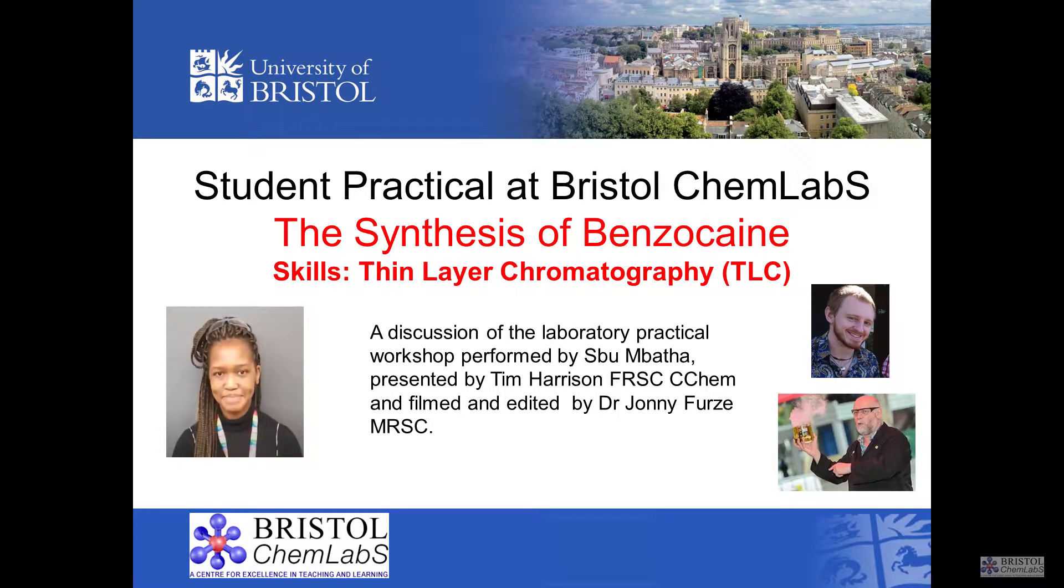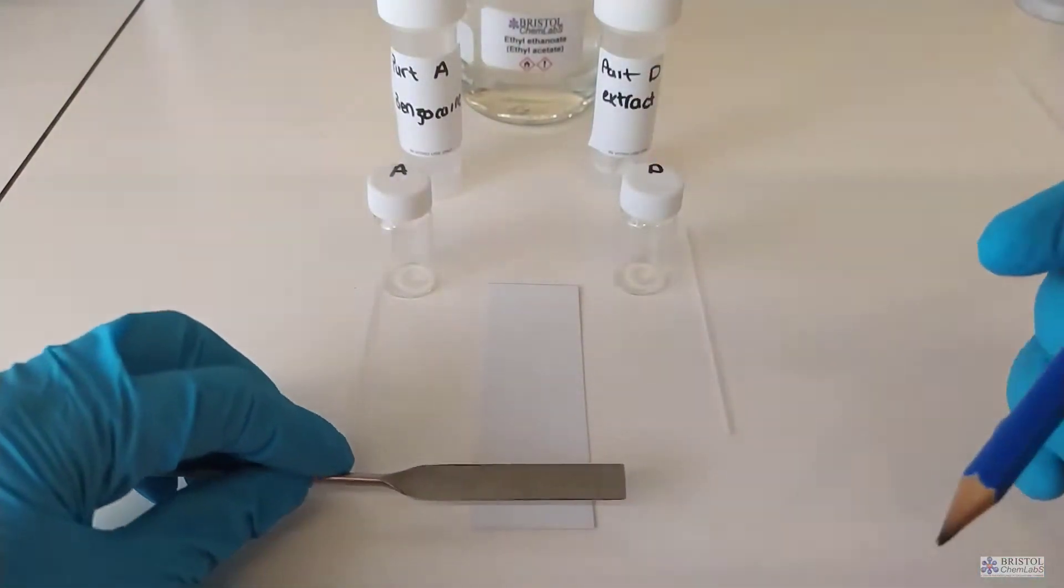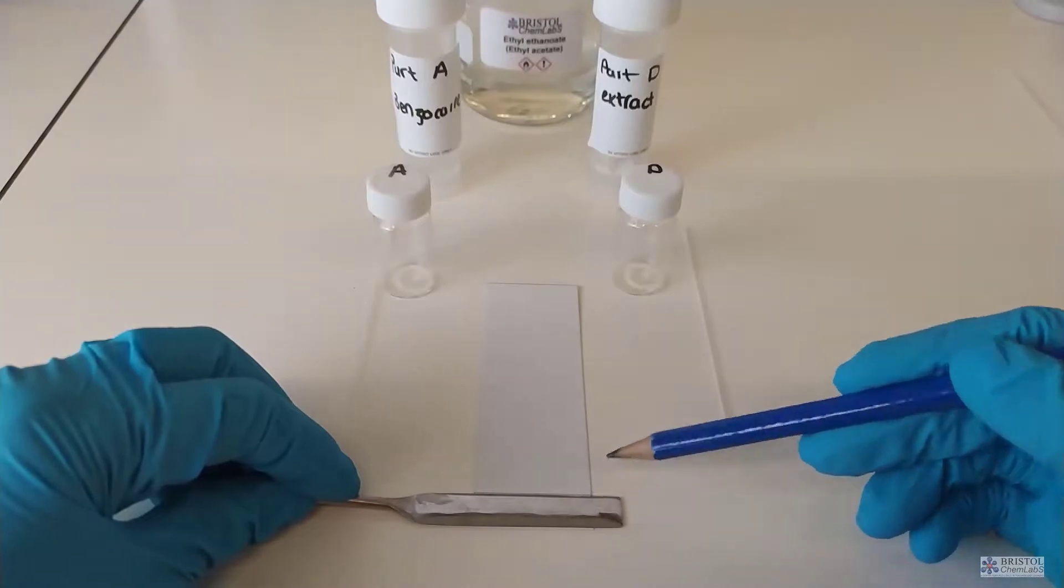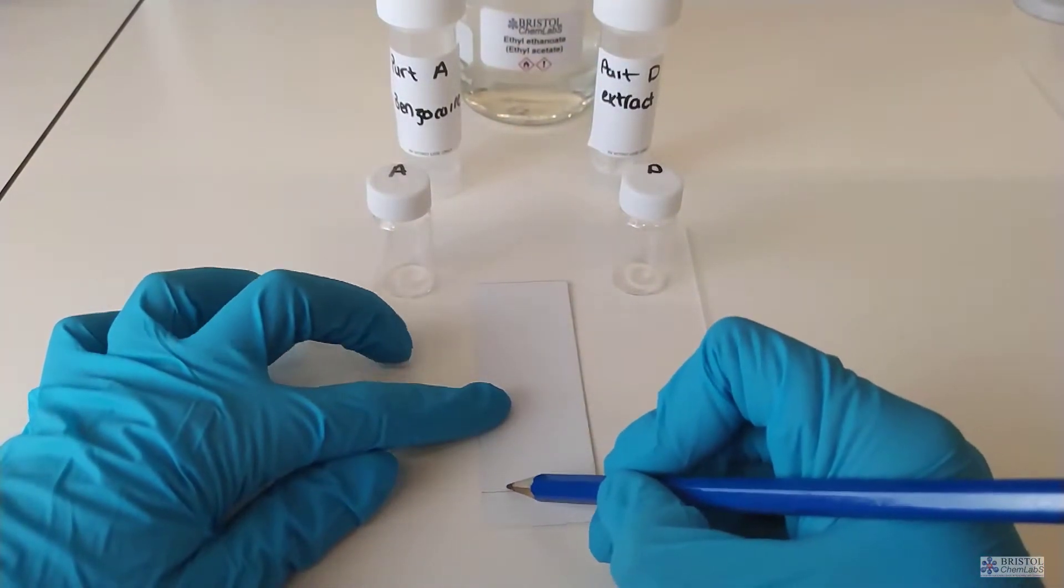One way of looking at the purity of the product formed in this synthesis is to use thin layer chromatography, which gets abbreviated to TLC. The TLC plate that is used contains alumina that has been treated with a fluoresce. The alumina itself is stuck either on the back of a plastic or aluminum support material.